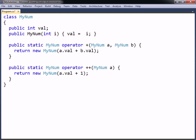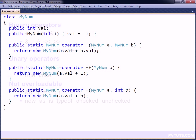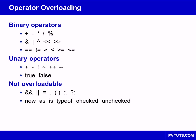This means that it is possible to further overload a binary operator with other method parameters, for example to allow a minum and an int to be added together. C-sharp allows overloading of almost all operators, as can be seen in this table. The combined assignment operators cannot be explicitly overloaded; instead, they are implicitly overloaded when their corresponding arithmetic or bitwise operators are overloaded.